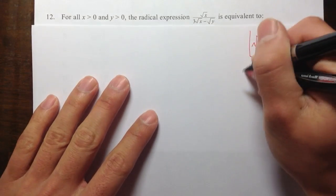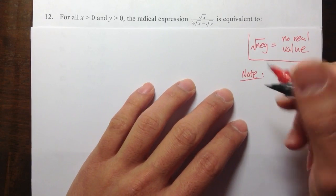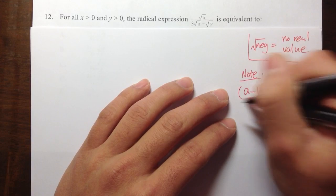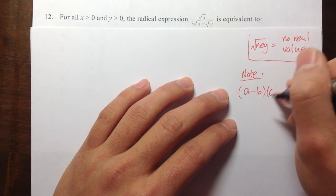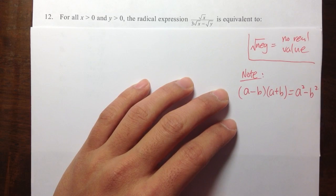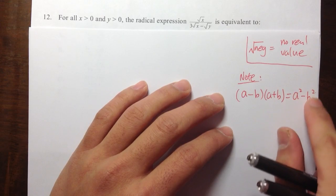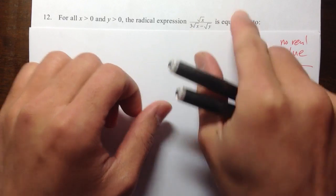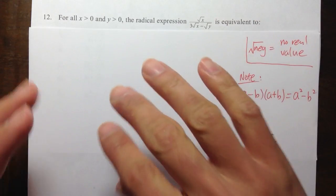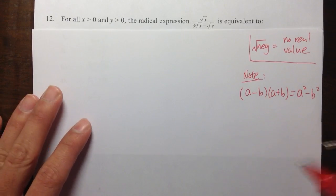Here's the key formula to recall. If you have (a − b) times (a + b), this gives you a² − b². We want to produce something squared, because when you take the square root of a square, the square root and the square cancel each other out. That's why we're going to use this approach.